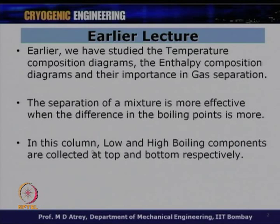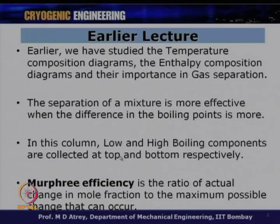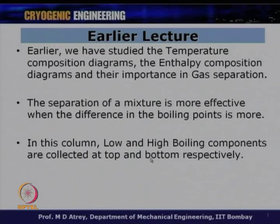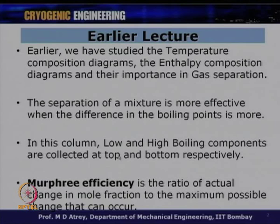In the distillation column, the low and high boiling components are collected at the top and bottom respectively. For example, in a nitrogen-oxygen system, you get liquid nitrogen at the top and oxygen at the bottom. We also defined Murphy efficiency, which is the ratio of actual change in mole fraction to the maximum possible change, indicating the ineffectiveness of the column and helping calculate the number of plates required.